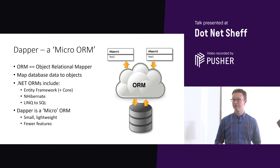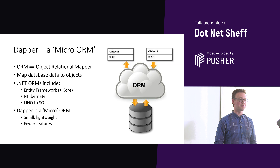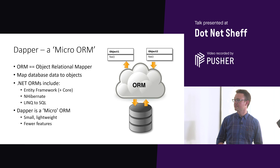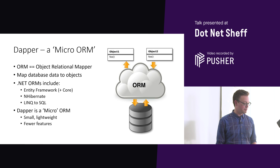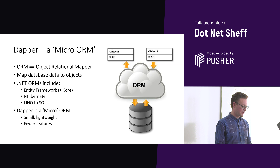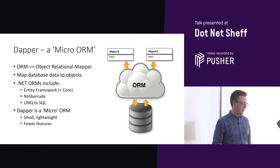The big one for .NET is Entity Framework, and now there's Entity Framework Core. Other ones you might have used: nHibernate, LINQ to SQL. Dapper does the same basic job as those — it maps database data to objects, but it's more lightweight.